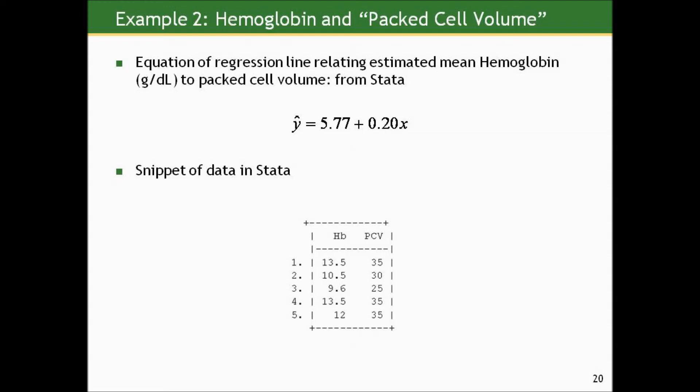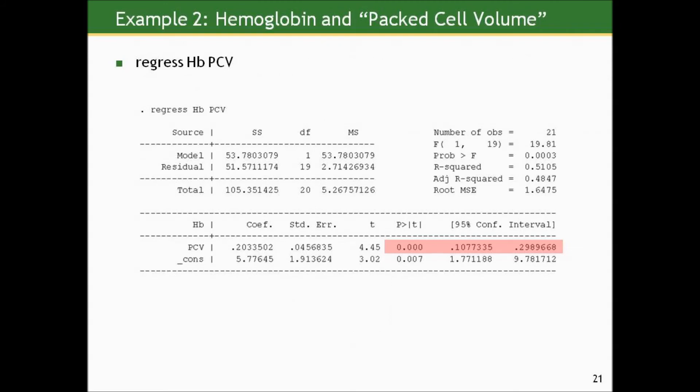Let's go back to the hemoglobin and packed cell volume example. The regression equation relating mean hemoglobin levels to packed cell volume percent was y-hat equals 5.77 plus 0.20 times X. With 21 observations, I called my hemoglobin variable 'Hb' and packed cell volume 'PCV'. Typing 'regress Hb PCV' gives the results I quoted — let's parse the output to recreate the equation.